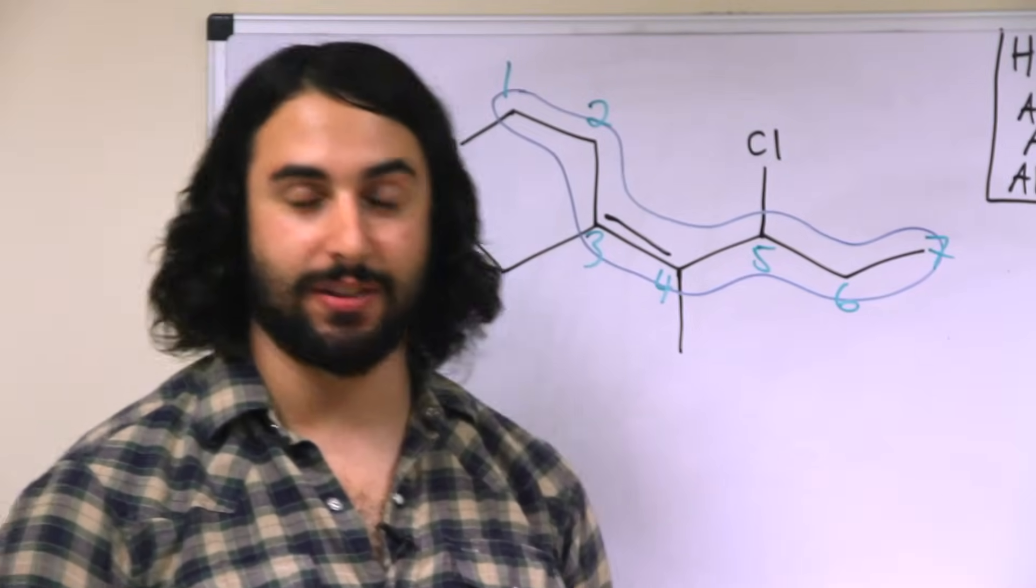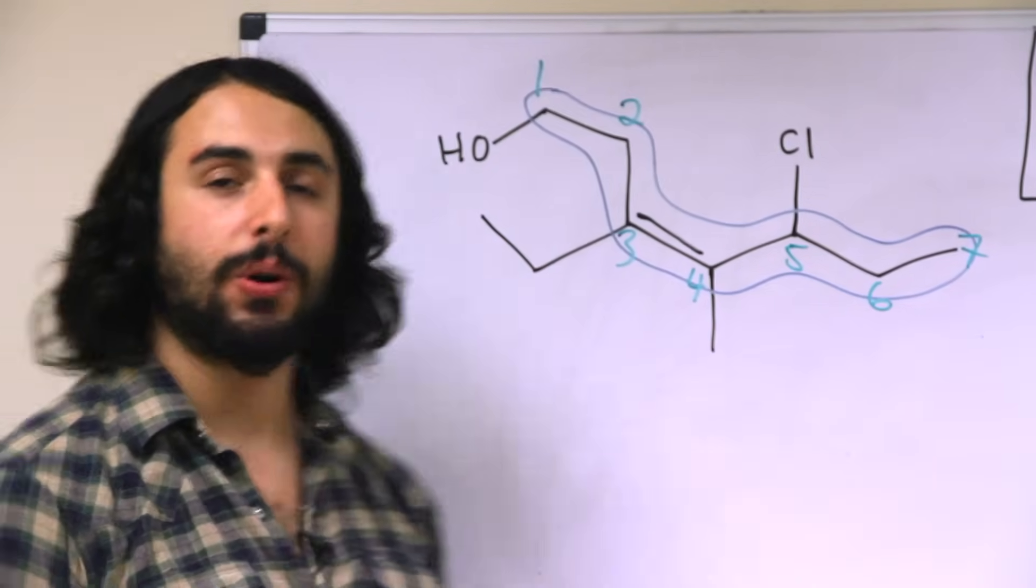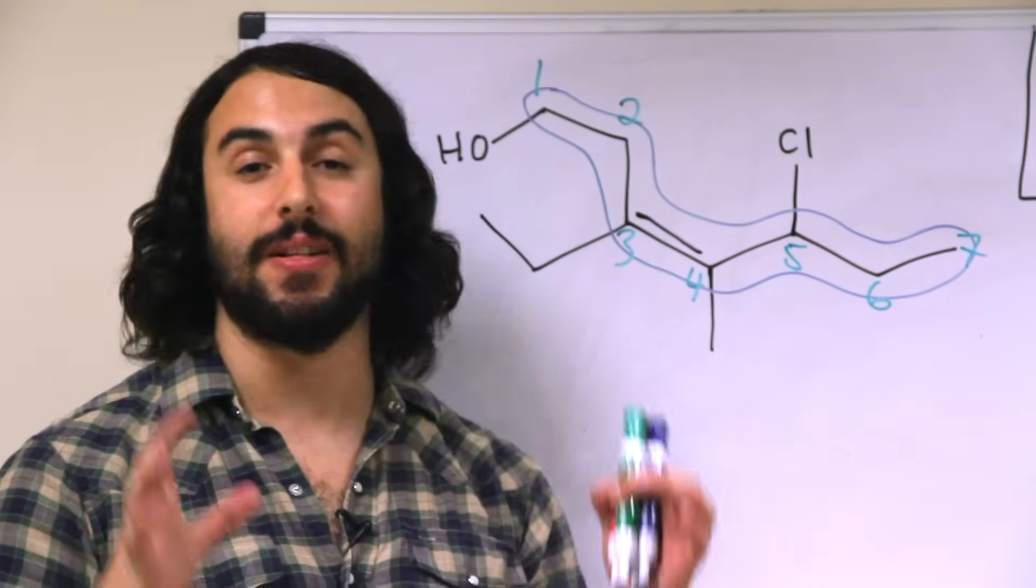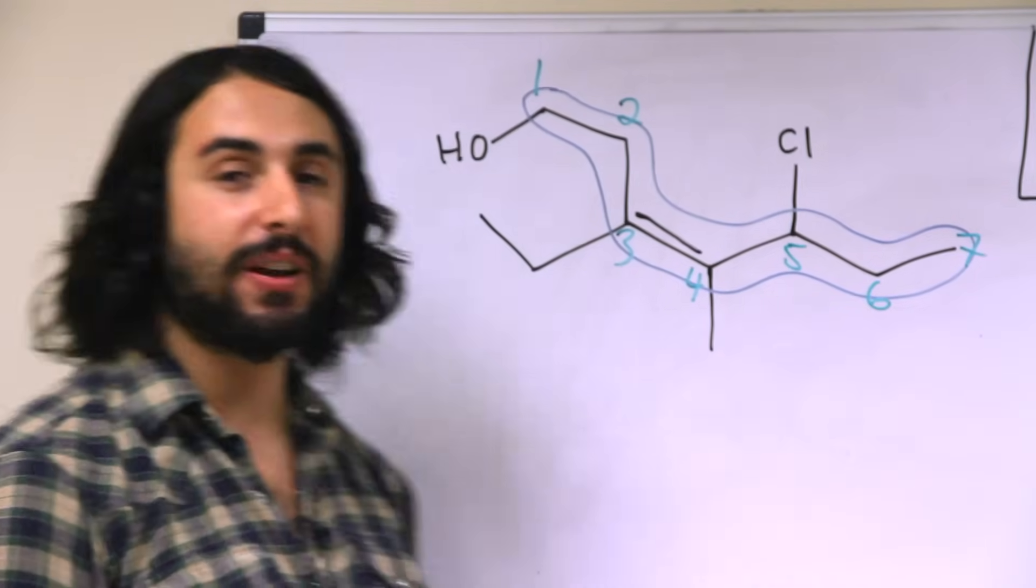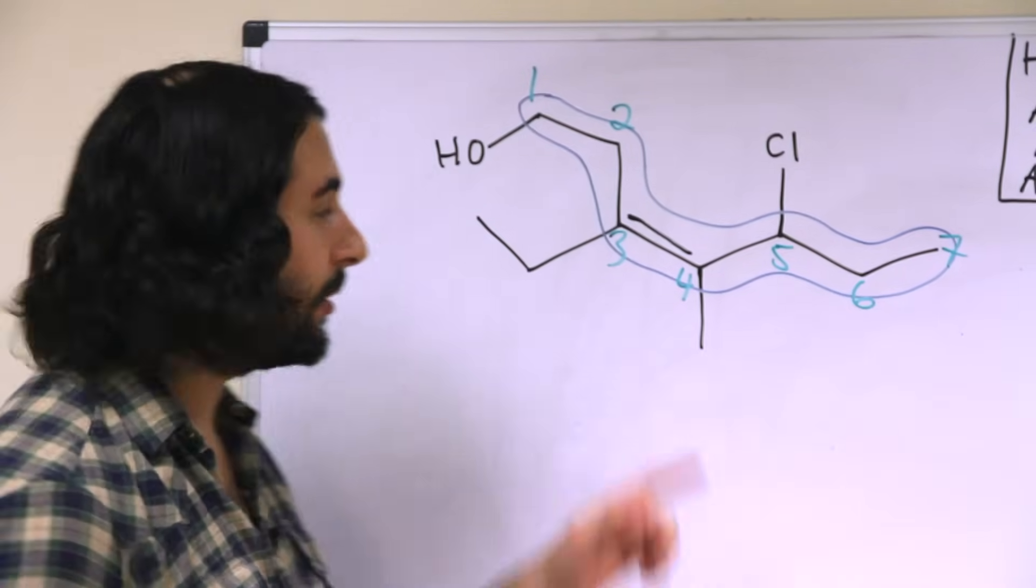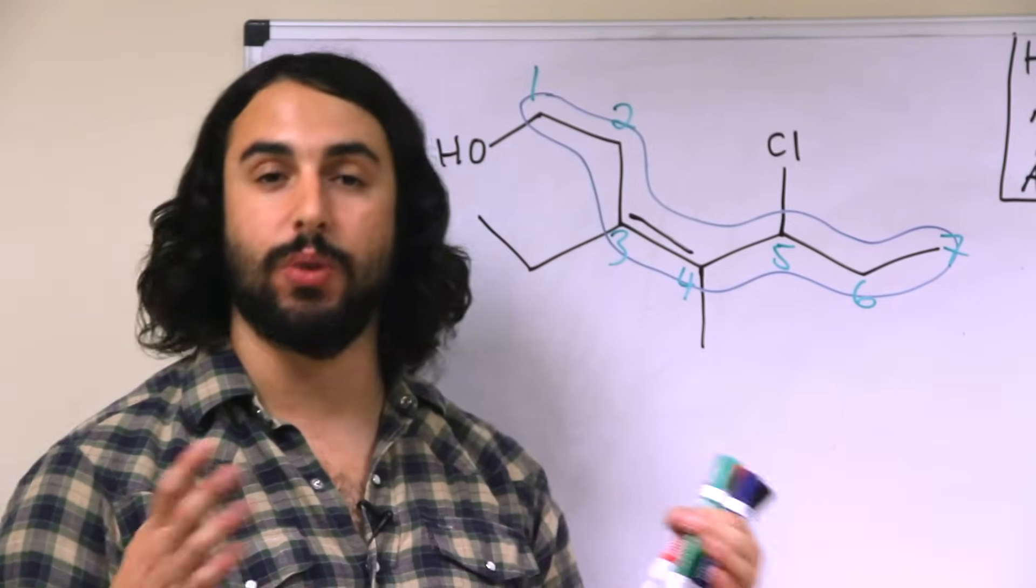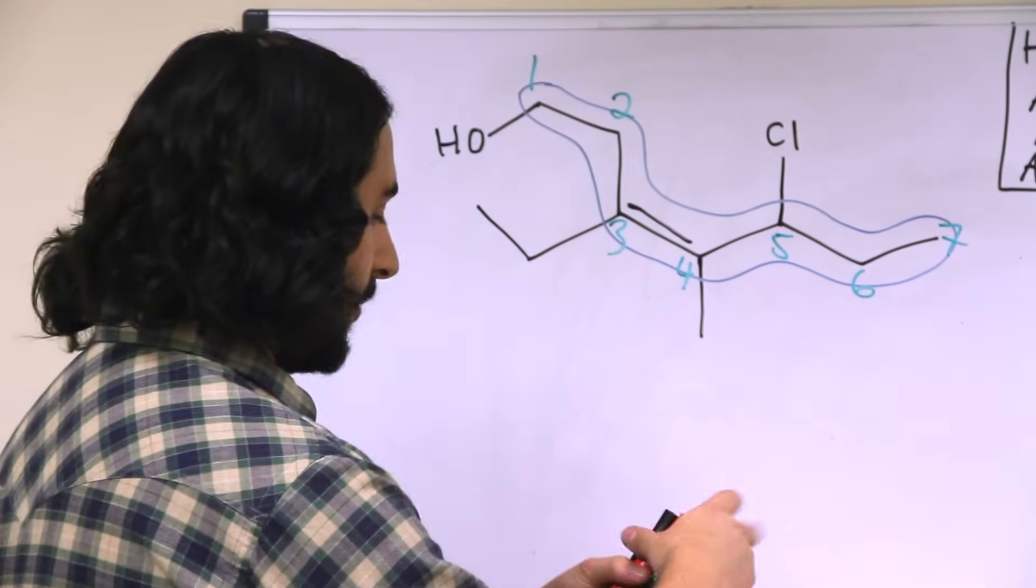Now here's another tricky thing. We on this molecule have two substituents that are both attempting to modify the suffix of the molecule because this is an alcohol, but it is also an alkene. So that's going to make things a little bit tricky to name, but we do have a way to do it. So let's see what we have.